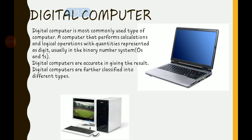Digital computer is the most commonly used type of computer. A computer that performs calculations and logical operations with quantities represented as digits — usually in the binary number system, that is zeros and ones — is called a digital computer. Digital computers are accurate in giving results and use discrete flow of data in the form of binary bits. Digital computers are mostly used in our daily life.